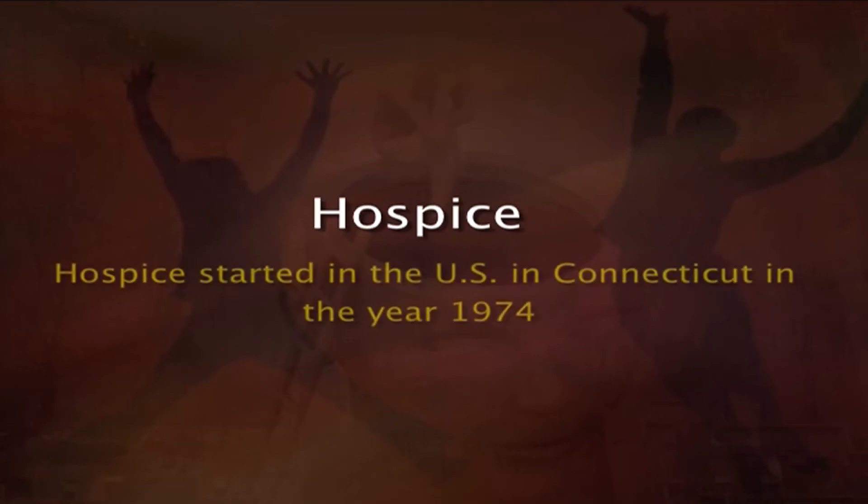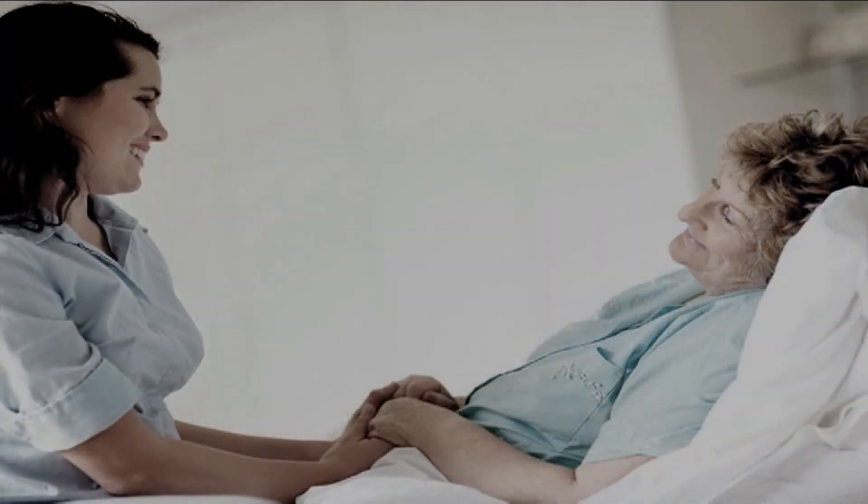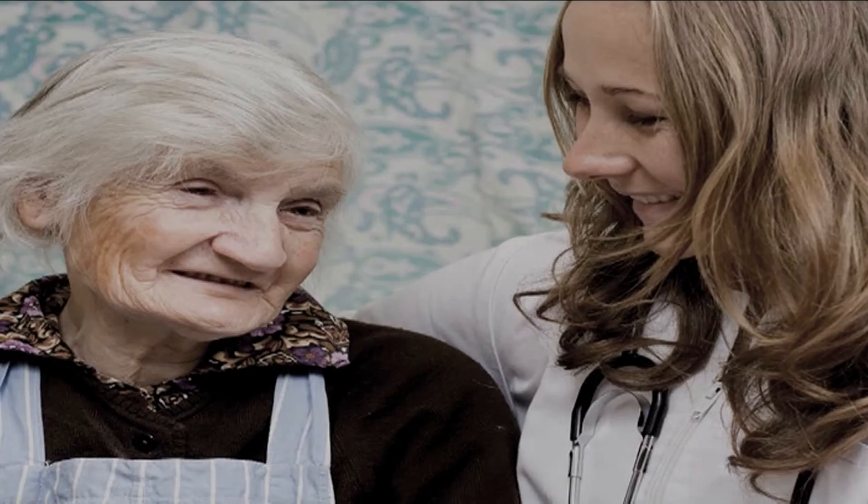Going on to the third system available today — hospice. Hospice started in the US in Connecticut in the year 1974. This hospice kind of treatment is devoted to allowing death to occur in a safe and pleasing environment and in a natural way. The hospice workers are trained in taking psychological care of the dying and also the family members. In hospice care, bereavement counselling is also involved, meaning that even after the death of the patient, the hospice workers continue to work with the family in helping them overcome grief.